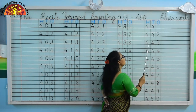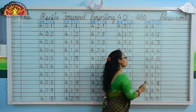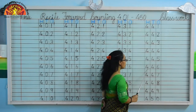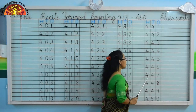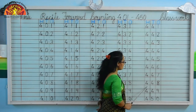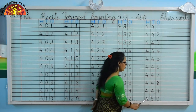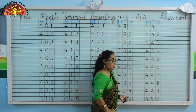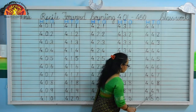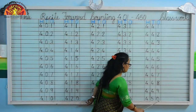Now, 442, 443, 444, 445, 446, 447, 448, 449. Kids, now you tell me what comes after 449? Yes, 450.